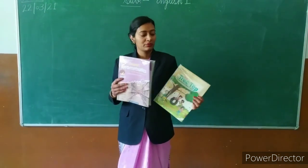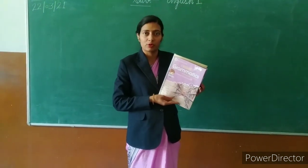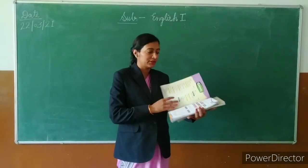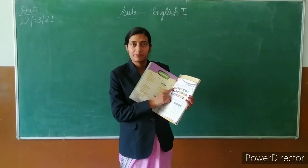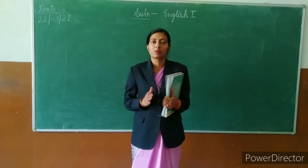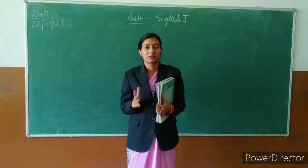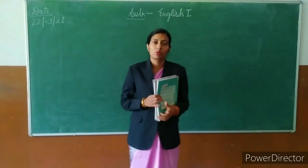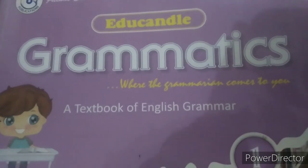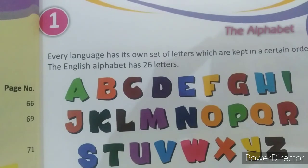Today in this class we are going to learn the first lesson of our English first book, called Grammatics. The name of our first lesson is The Alphabet. So all of you are requested to open your book, and you have to keep yourself a copy, pencil, eraser, and sharpener also. So keep these things with yourself. This is your grammar book — let's open the book. This is lesson one, and the name of the lesson is The Alphabet.